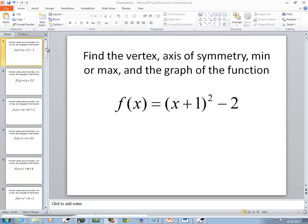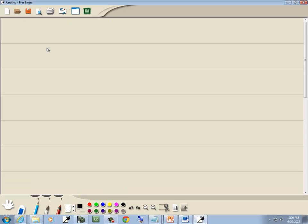In this problem, we want to find the vertex, axis of symmetry, min or max, and graph of the function. So we've got f(x) = (x+1)² - 2.